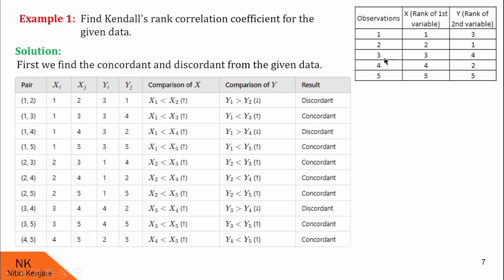The pairs are (1,2), (1,3), (1,4), (1,5), (2,3), (2,4), (2,5), (3,4), (3,5), and (4,5). In all, there will be n(n minus 1)/2 number of pairs.